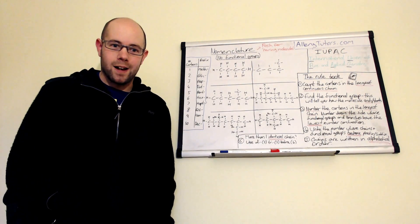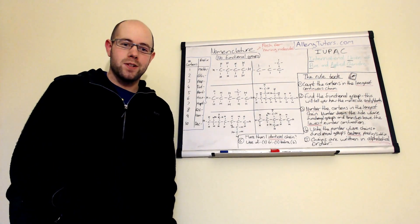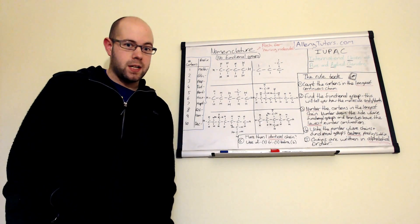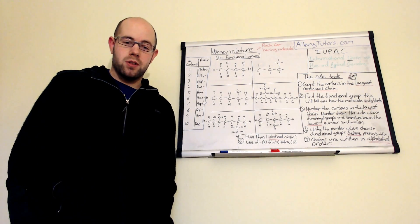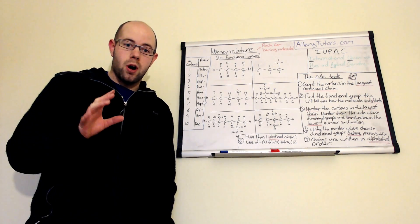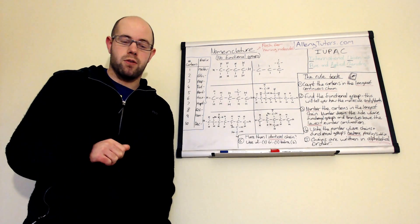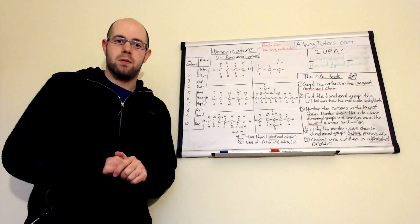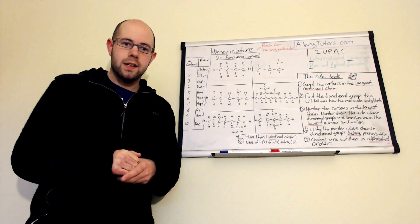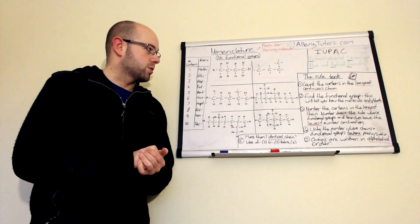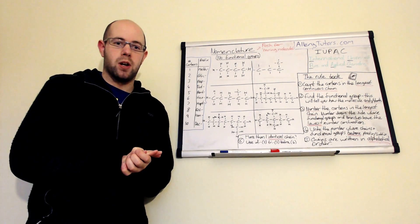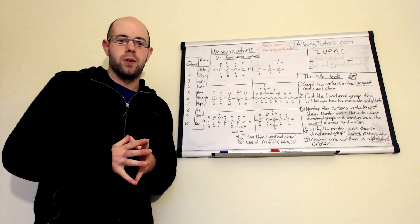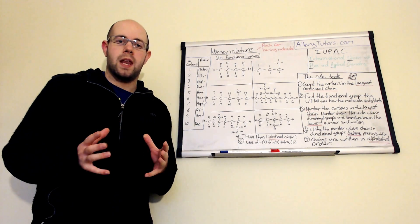Hi everyone, my name is Chris Harris and I'm from AlleryTutors.com. In this video we're going to look at nomenclature - the naming of compounds, particularly in organic chemistry. This video only looks at molecules with no functional groups, so just hydrocarbon chains with some branching. We're also going to look at what IUPAC is and some basic rules that allow us to name these molecules. This is very important but it can be tricky, so you've got to make sure you're numbering and naming them properly.